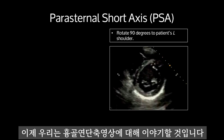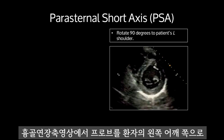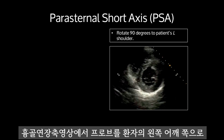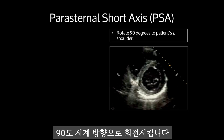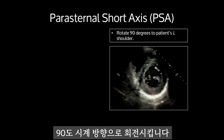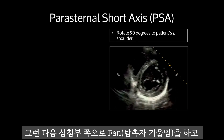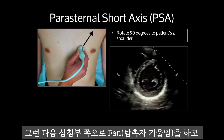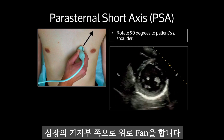Now we're going to talk about the parasternal short axis. From the parasternal long axis view, rotate the probe 90 degrees clockwise towards the patient's left shoulder. Then fan towards the apex and up towards the base.